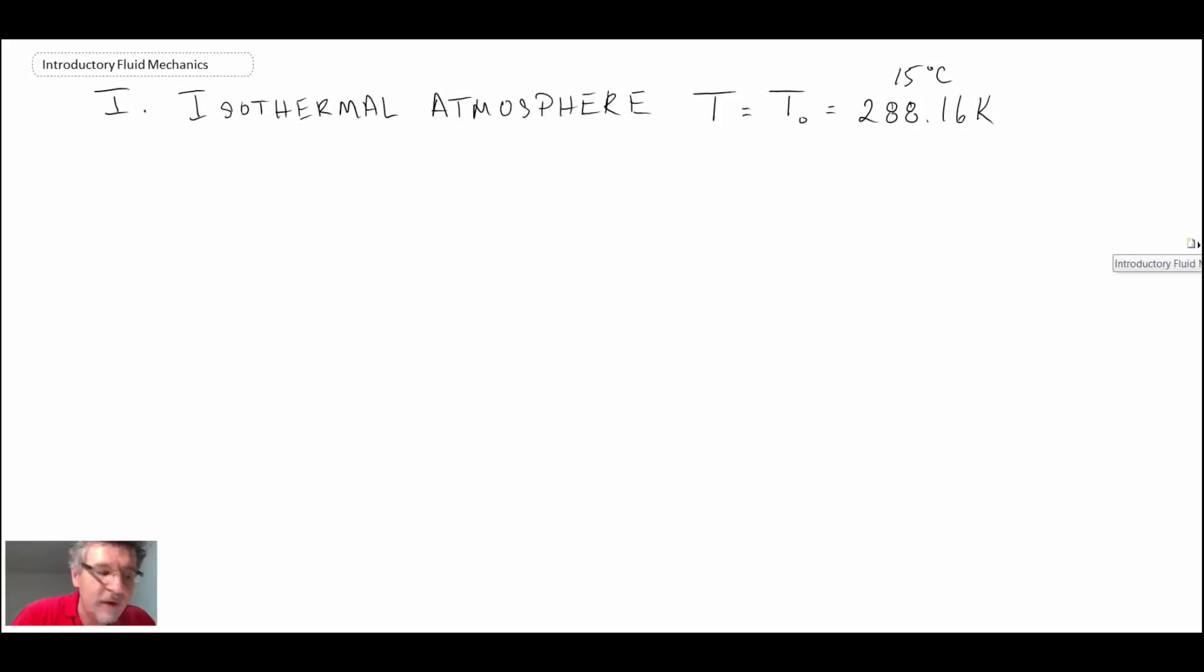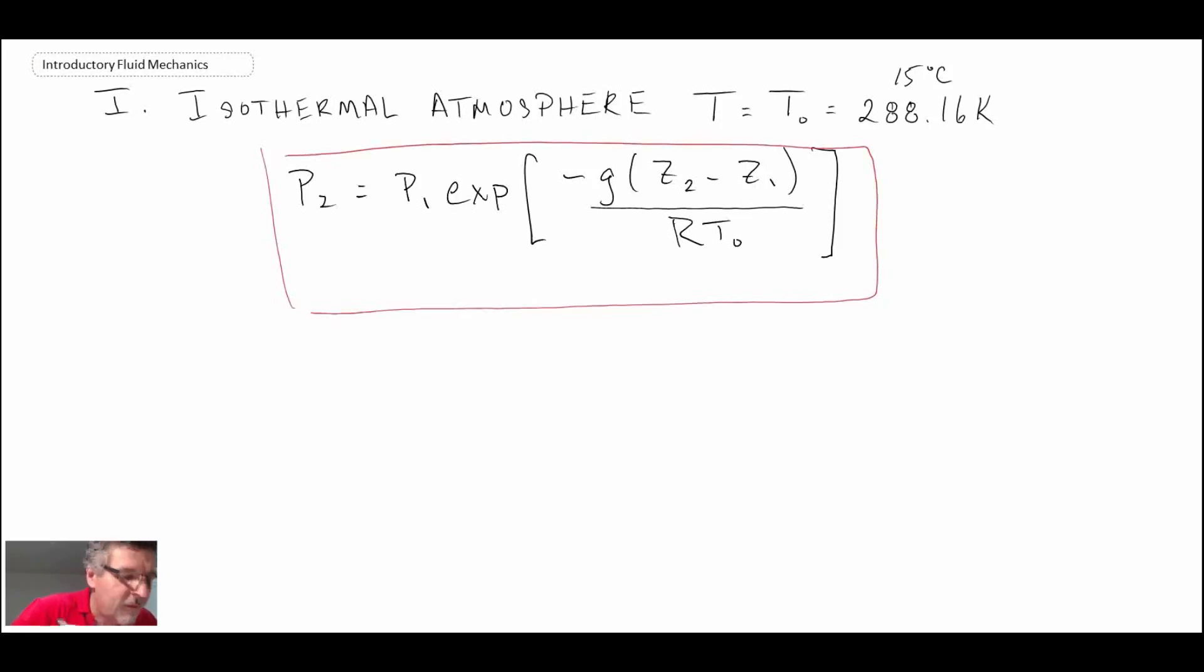What we get is P₂ equals P₁ times the exponential. Remember we had a natural log and that's where the exponential is coming from. Temperature is a constant, so that's what we get if we can assume it to be an isothermal atmosphere. Fairly straightforward.